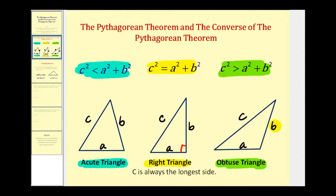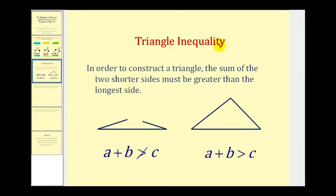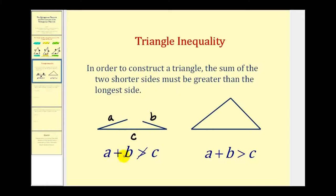Before we look at examples, we need to talk about the triangle inequality. When given the length of three segments, it's not always possible to form a triangle. In order to construct a triangle, the sum of the two shorter sides must be greater than the longest side. If a plus b is not greater than c, these two sides could not reach each other and therefore could not form a triangle. So we must always check that a plus b is greater than c.